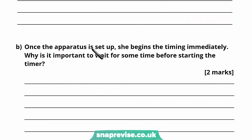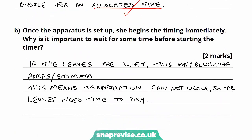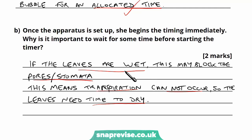Part B says once the apparatus is set up she begins the timing immediately. Why is it important to wait for some time before starting the timer? If the leaves are wet, this may block the pores or the stomata — because the stomata are very small, only about a cell or two thick — meaning that transpiration cannot occur, so the leaves need time to dry. We also need the plant to adjust, having just been cut from its plant and put into a strange piece of apparatus.